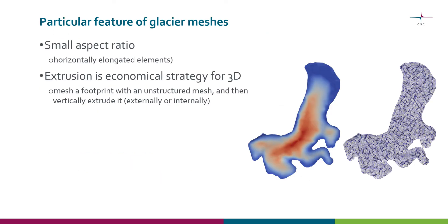Internal extrusion is especially well suited for computational glaciology. There we typically have small aspect ratios in the meshes, and we know where the ice is active, so we can make an initial footprint and extrude it to the third direction to get a nice 3D computational mesh.